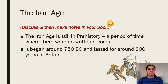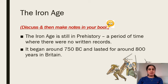Now we're going to go through some information about the Iron Age and I would like you to make notes as we read through the slide, focusing on the key information. So the Iron Age is still in prehistory. Remember, prehistory is a period of time when there were no written records. It began around 750 BC and lasted for around 800 years in Britain. So pause the video here to make some notes about that information.